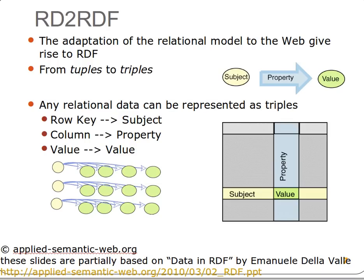Hello again. We continue explaining the idea behind RDF — I'm using this slide again as a reminder. To convert relational data to RDF, we have the concept of triples: subject, property, value — or subject, predicate, and object. Every table in relational data can be converted to that format: the subject comes from the row, and the property comes from the column.